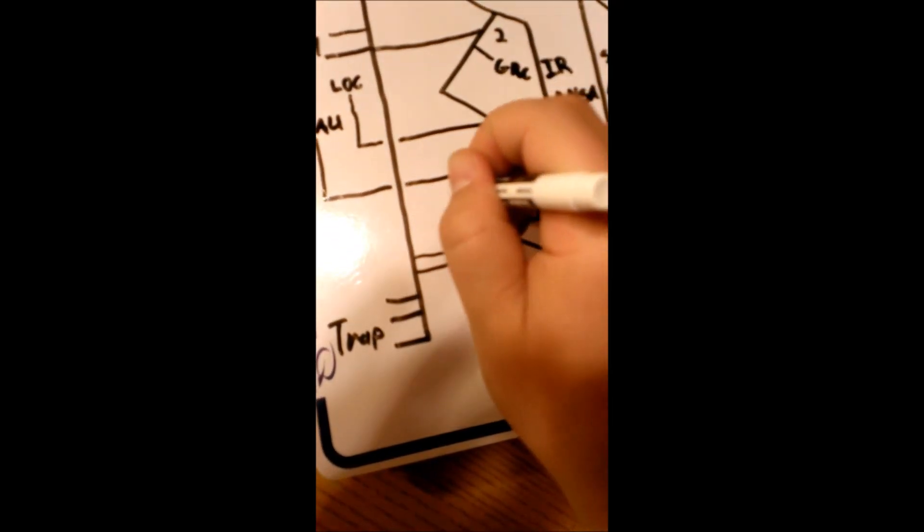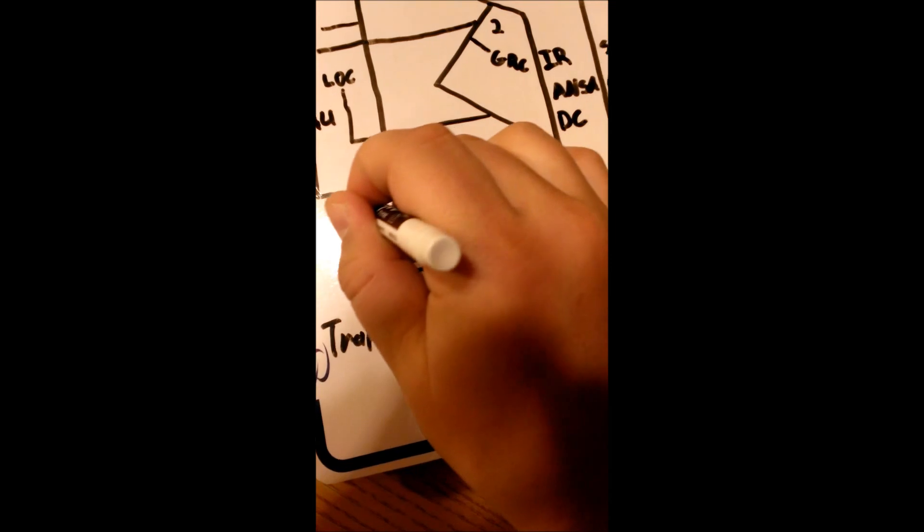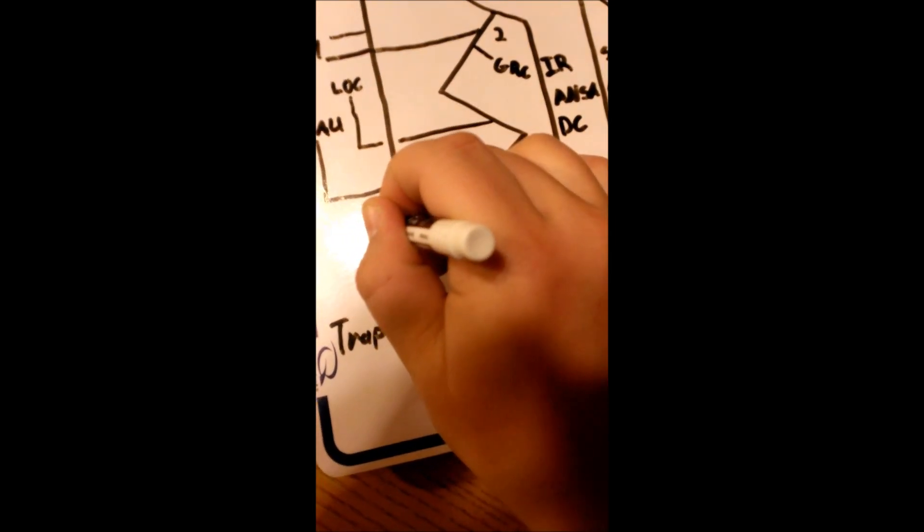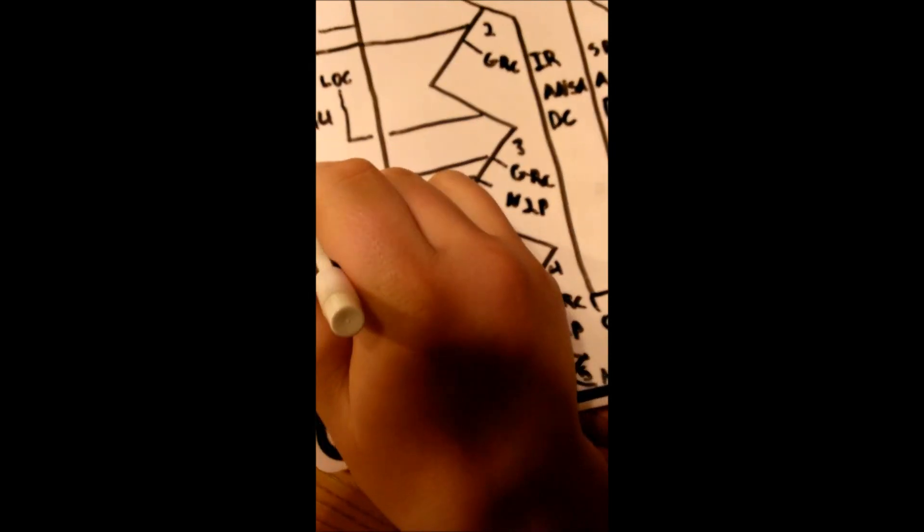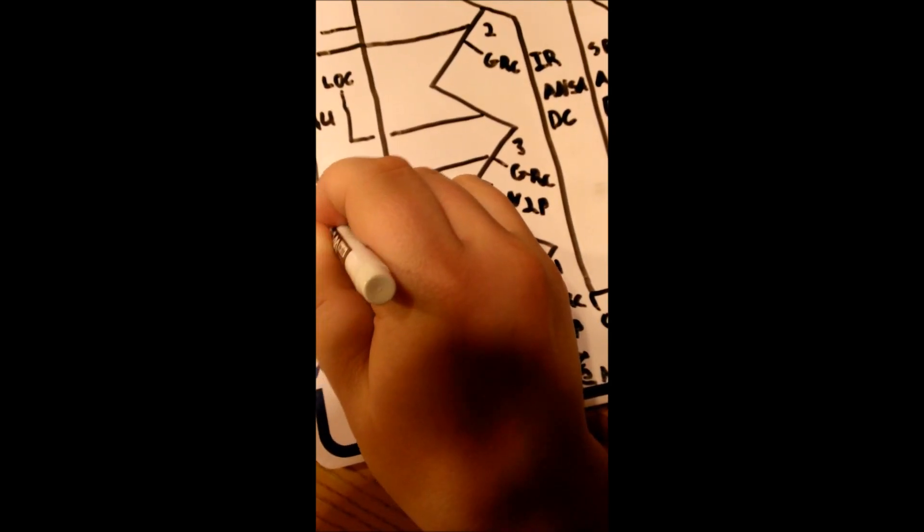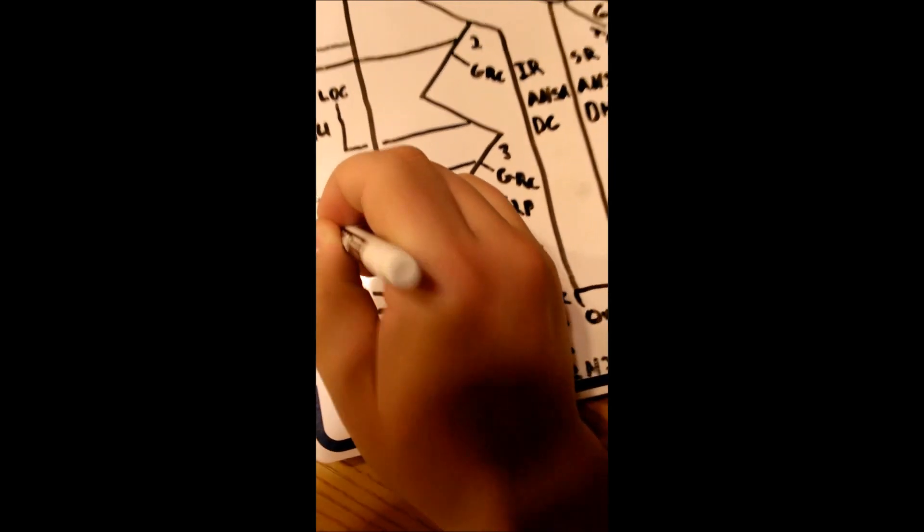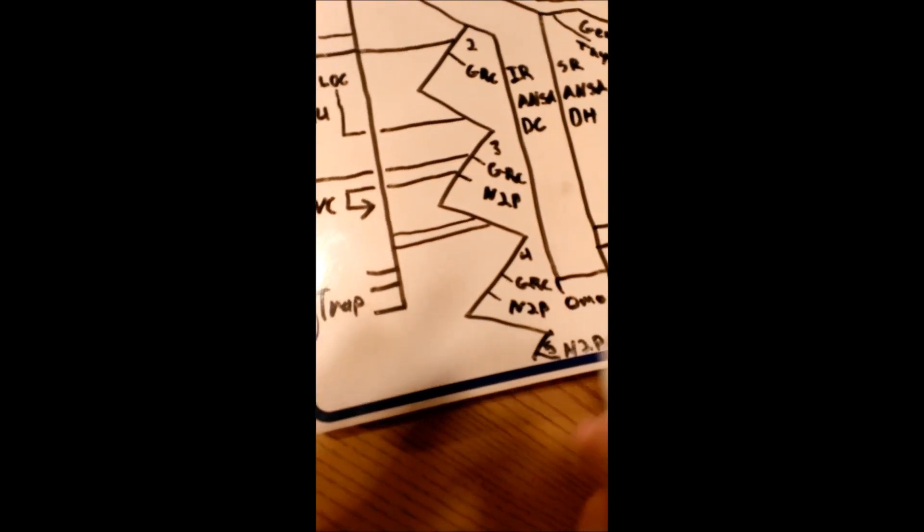And directly below that. And this last branch actually passes over the nerve and then kind of makes a U-turn. Goes all the way to the front of the neck. And that is the transverse cervical.